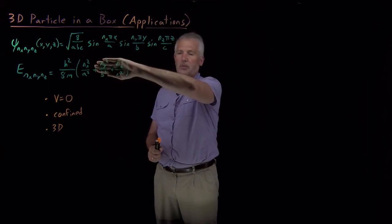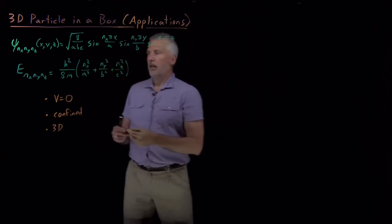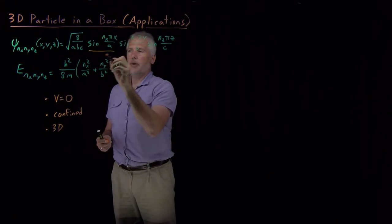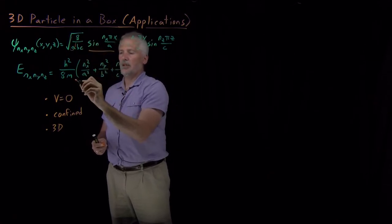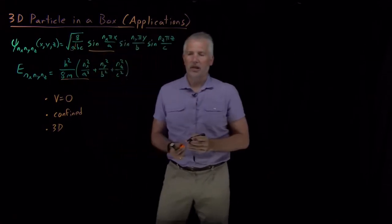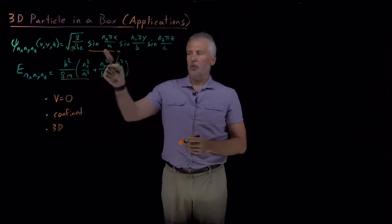ignore the y and z contributions to the energy. And this much of the wave function with part of the normalization constant and this much of the energy is exactly the result we had for the 1D particle-in-a-box.